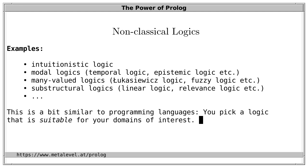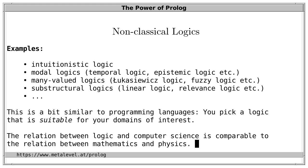If you think about it, this situation is a bit similar to programming languages. One reason to pick a logic is that it may be most suitable for your domain of interest, just as you would pick Prolog or PostScript depending on the task. In analogy to programming languages, it may be an advantage to have particular inference rules available as a built-in feature instead of having to simulate them. And as another useful analogy, the relation between logic and computer science is comparable to the relation between mathematics and physics — in the sense that logic helps us to express and reason about the things we are interested in as programmers.